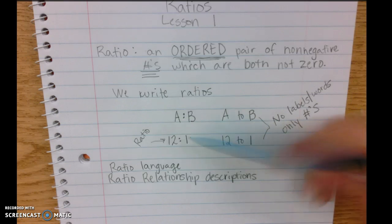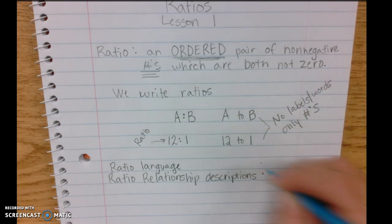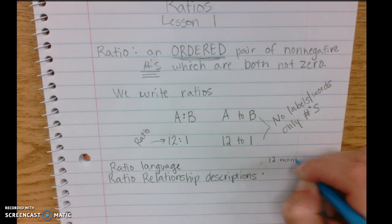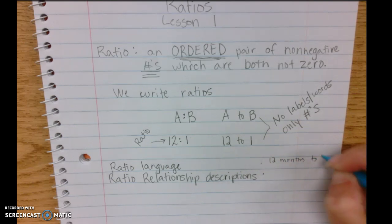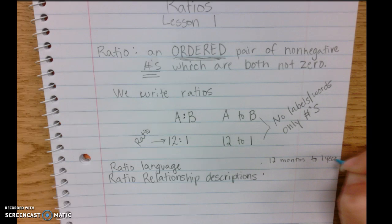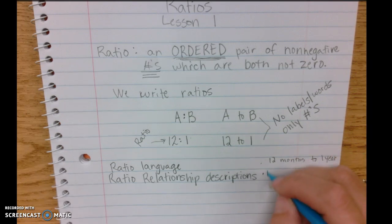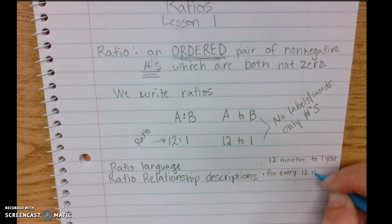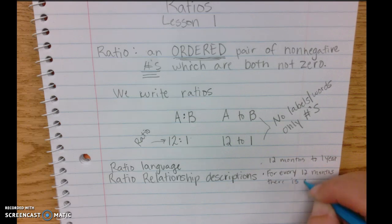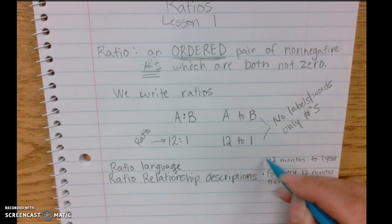So if they asked you to look at this ratio and say what the description of that ratio is, that's when we would write there are 12 months to one year, or we might say for every 12 months there is a year.